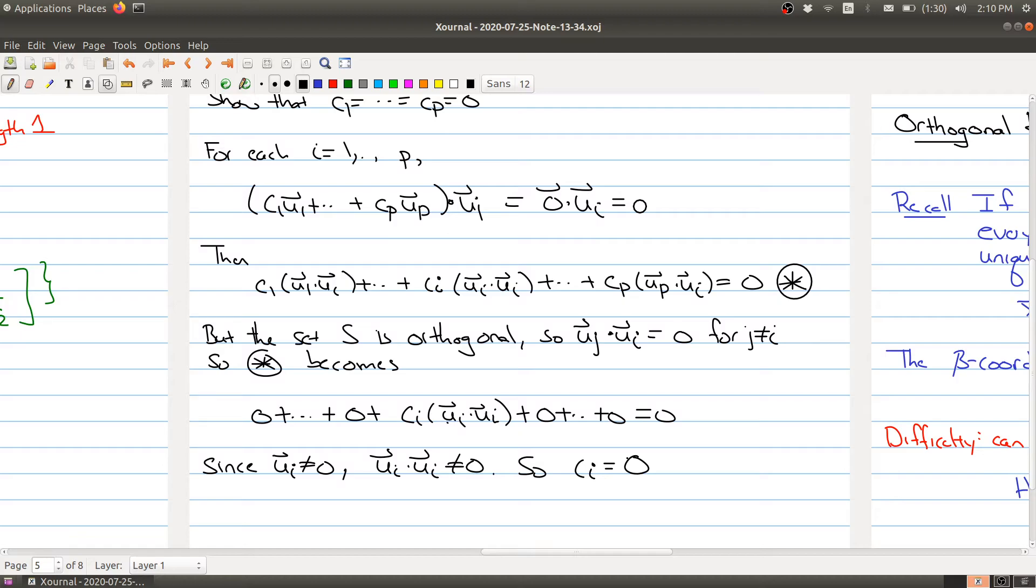So ci has to be zero. But this was true for any particular i. So what we have is all c1, c2 up to cp is equal to zero. And then that's another way of saying S is linearly independent. Just finishing the proof.